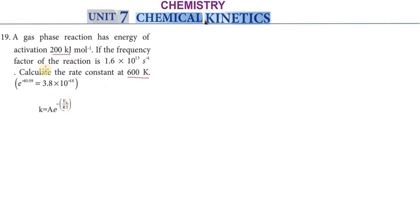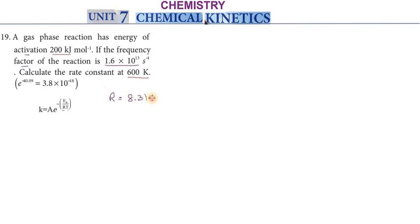For this gas phase reaction, the energy of activation value and the frequency factor value are used in the formula. Ea is equal to 200 kJ per mole. The frequency factor A is 1.6 into 10 to the power 13 per second. Temperature is 600 Kelvin. R, the gas constant, is 8.314 Joule per Kelvin per mole.